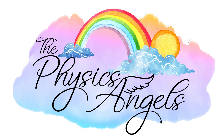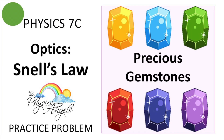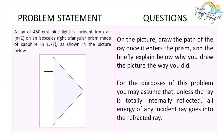Hello everybody, welcome back to our channel. In this episode we're going to be solving a Physics 7C practice problem on the topic of Snell's law and optics. As usual, if you're finding this content helpful please make sure to leave a like and subscribe. The problem: a ray of 450 nanometer blue light is incident from air on an isosceles right triangular prism made of sapphire with n=1.77. The instructions say to draw the path of the ray once it enters the prism and explain why. For this problem, assume that unless the ray is totally internally reflected, all energy goes into the refracted ray.